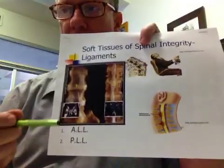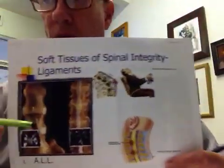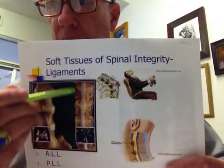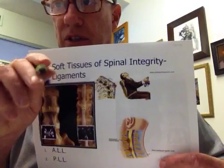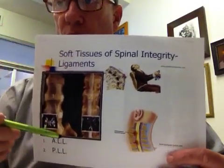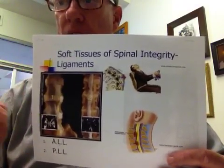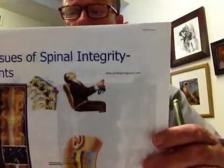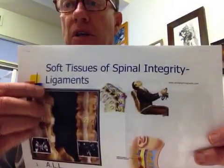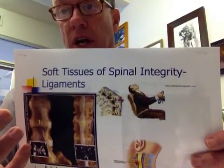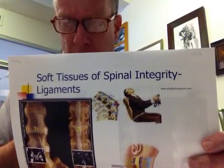Here's another view of the ALL and the PLL. You have to do a pediculectomy — cut through the pedicles — to find the PLL. The ALL is woven into the periosteum of the vertebrae. When this driver was rear-ended, the initial action is hyperextension, and the ALL would be challenged and sprained. Then the reaction would be hyperflexion and the PLL would be challenged.